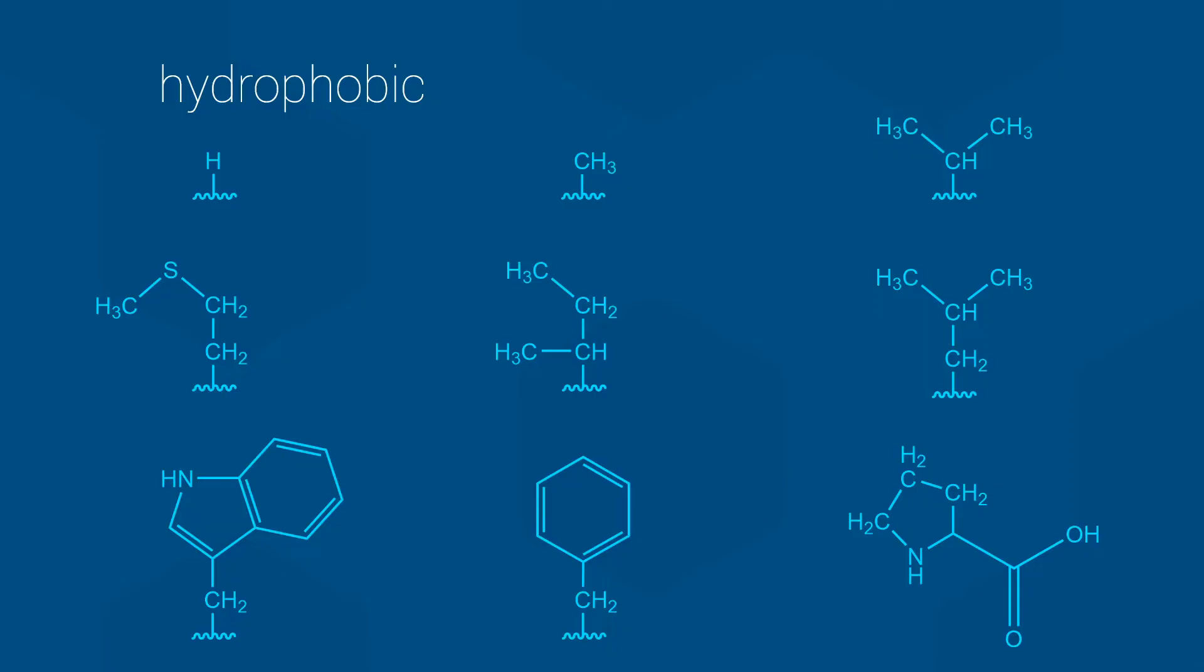There are some interesting things to point out here. Methionine's side chain contains a sulfur atom and therefore does have some weak polarity. However, in most cases, this side chain acts like a typical non-polar group. Tryptophan has two large carbon-based rings that are very non-polar. The only weird part is that one of the rings does contain a nitrogen with a hydrogen atom that can be donated to form a hydrogen bond. Finally, proline's side chain is quite unusual. Here the side chain loops back onto the amino acid and forms a covalent bond to the amino group. This has some serious implications for proline inside proteins, but that is not something we deal with here in Biology 112. You can simply treat proline as another hydrophobic amino acid.